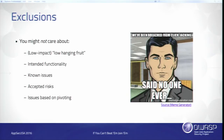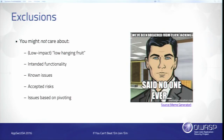Just as important as defining what you want researchers to test is calling out what you don't want them to test. If we don't tell researchers what we don't want to find, researchers are going to submit everything. Then the researchers spend time writing those reports, and you have to spend time evaluating them and interacting with researchers. So call out areas researchers typically submit. Things you might not care about include low-impact, low-hanging fruit. The poster child for this is clickjacking. Make sure you call out whether or not you care about clickjacking so researchers aren't submitting it if you don't want to see it.